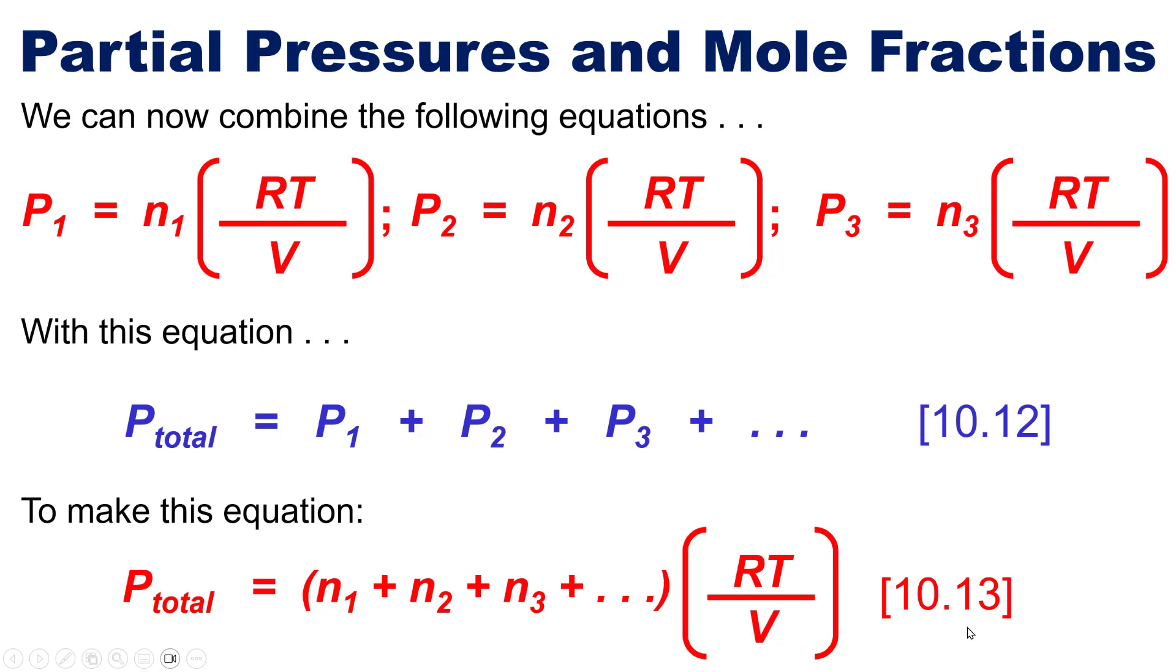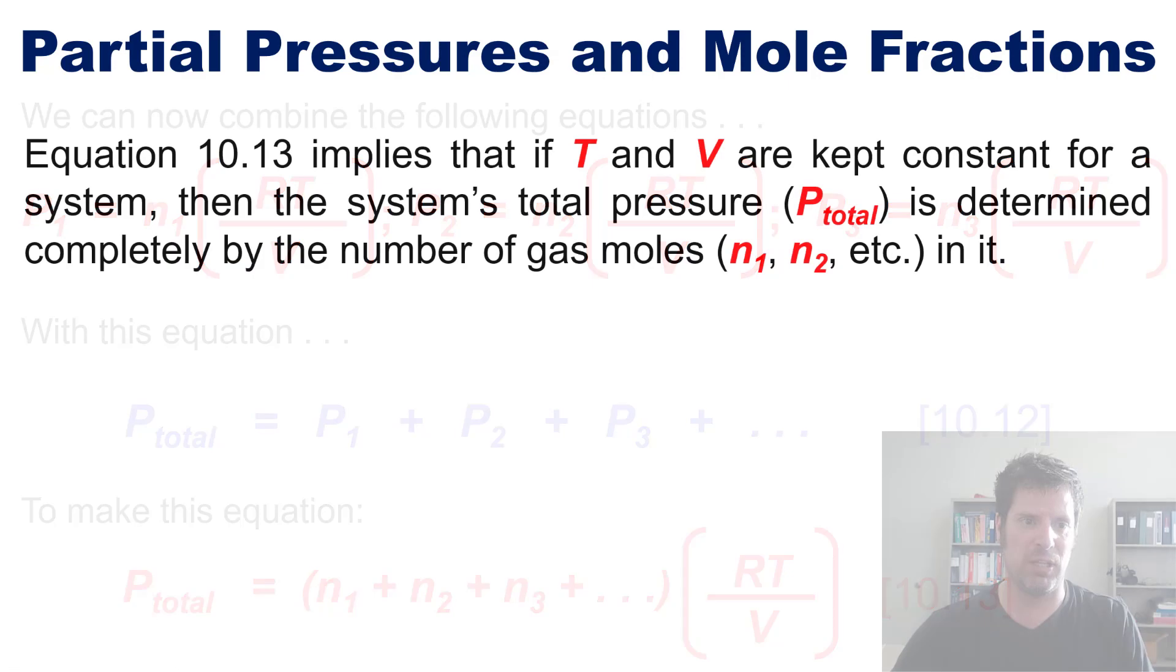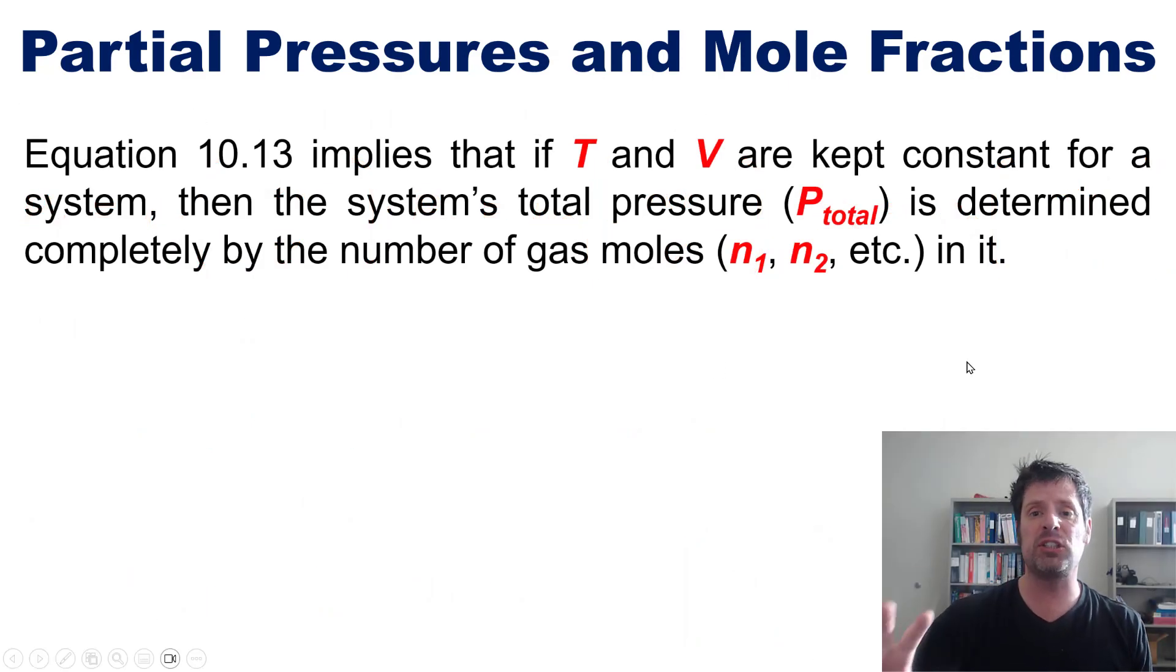Now this equation right here, 10.13 from our text, implies that if temperature and volume are kept constant for a system, then the system's total pressure is determined completely by the number of gas moles in it. So what in the world does this mean?